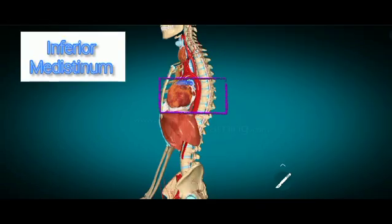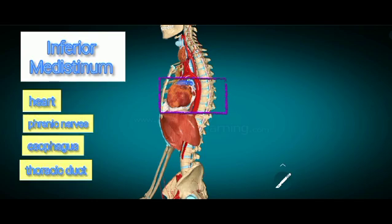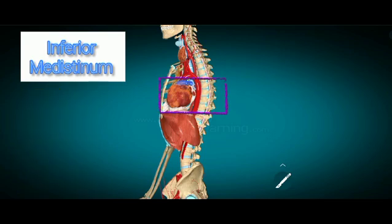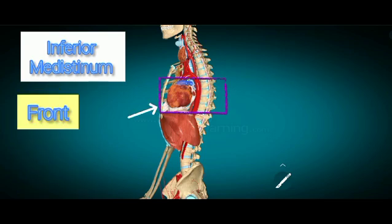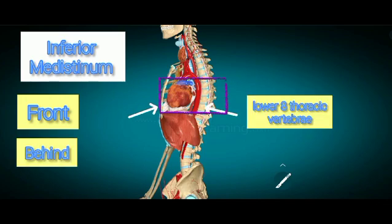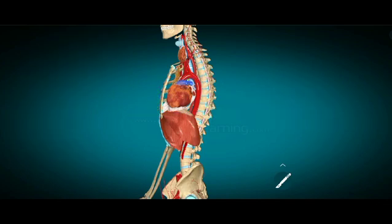In the inferior mediastinum we have the heart, phrenic nerves, oesophagus, thoracic duct, and the descending aorta. In short, the inferior mediastinum is bounded anteriorly by the body of the sternum and posteriorly by the eighth thoracic vertebra.